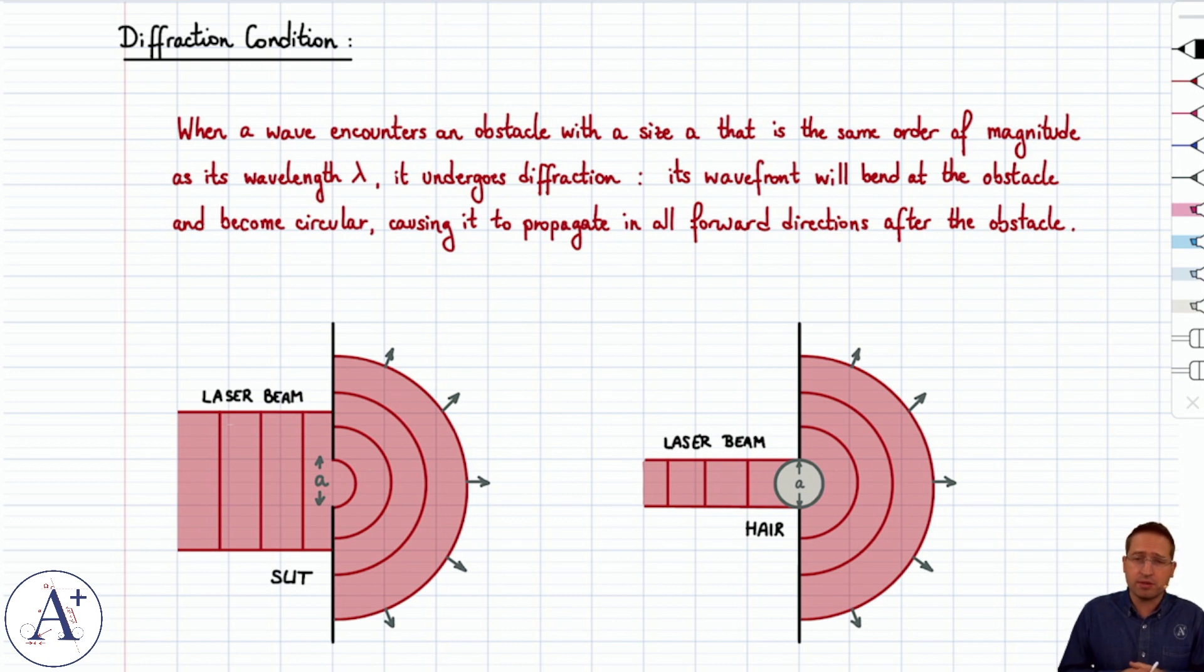Well, it turns out that it does, and you could anticipate that with Huygens' principle, but the point is that when light encounters an obstacle, be it an actual opening or a physical object that has a size that is about the same order of magnitude as its wavelength, it undergoes diffraction.